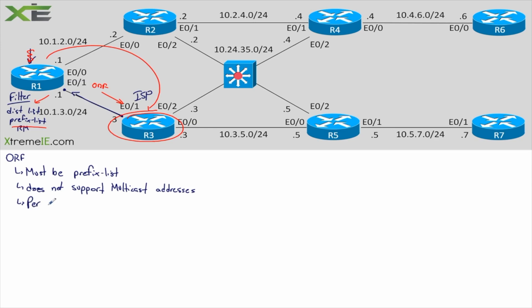This is also going to be a per-neighbor configuration. This is not a global command — you can't say filter this for everybody. It has to be configured per neighbor. Last thing: it's only on external sessions. If I'm running IBGP, I'm not going to configure this — only on external BGP sessions.